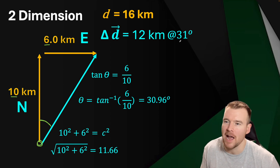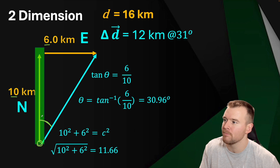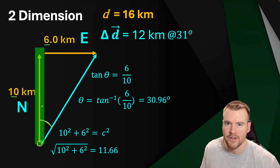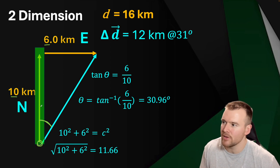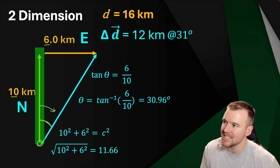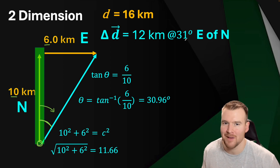To describe the angle, we reference north, east, south, and west. The angle has one line going up at an angle, and one line going directly north — highlighted here. Instead of going directly north, we went to the east of north. So we describe that as 31 degrees east of north. It takes a little time to get used to that description, but that's how we write this one.